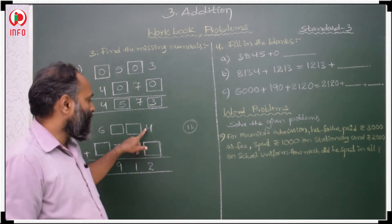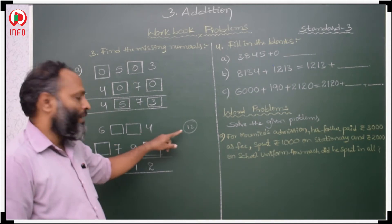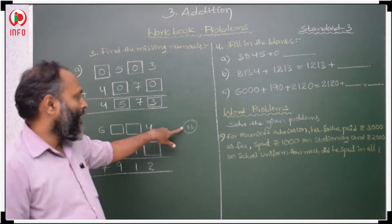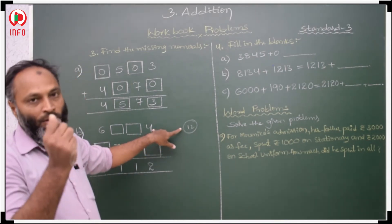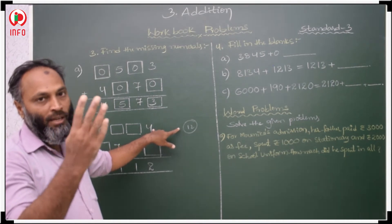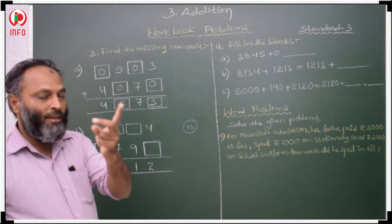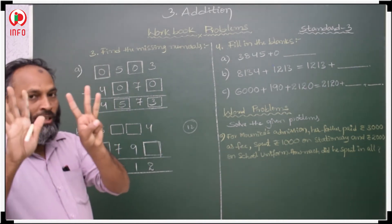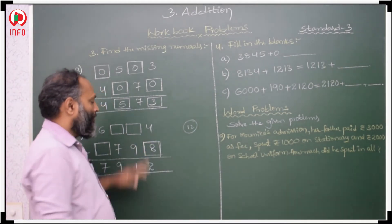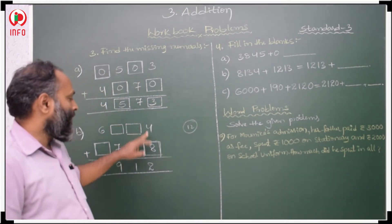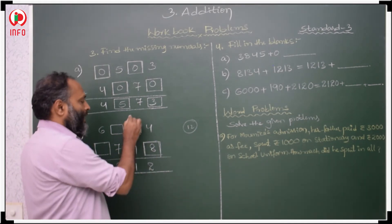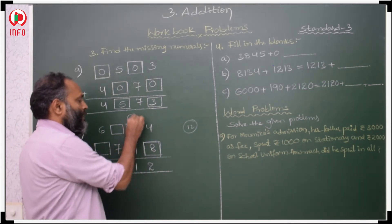Then to get 12, how much is added to 4? Count from 5 to 12: 5, 6, 7, 8, 9, 10, 11, 12 — total 8. If I take 8 here, then 4 plus 8 is 12. 12 means 2 is here and 1 carry here.